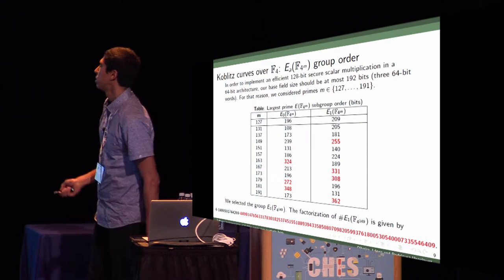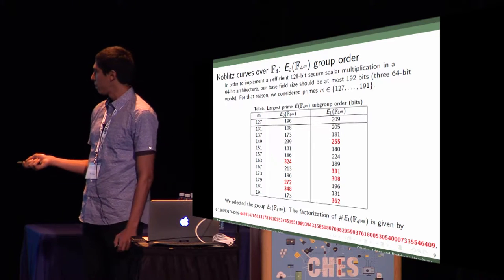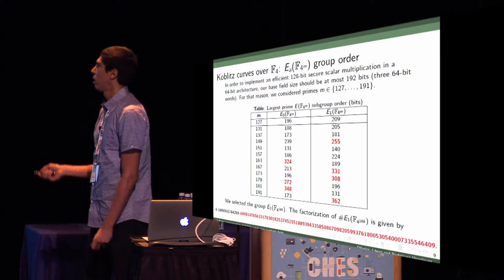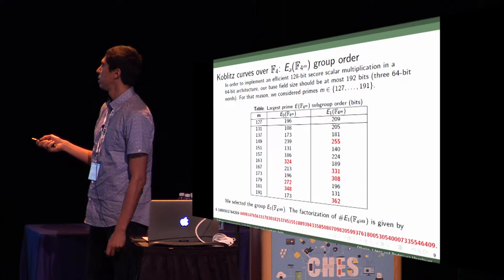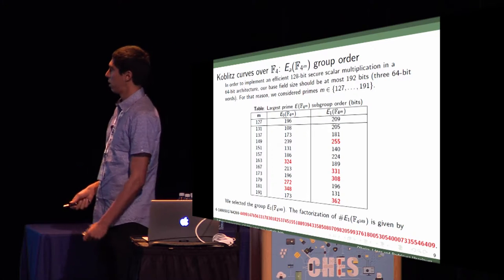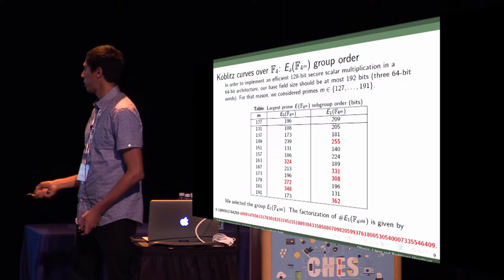The ones in red are feasible for implementing 128-bit secure scalar multiplications. We chose this group, 4 to the power of 149, because this has a subgroup of 255 bits. We have a suitable number of iterations to be done in the main loop of scalar multiplication. The group factorizes like this.